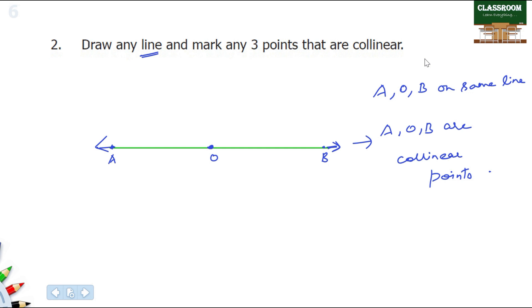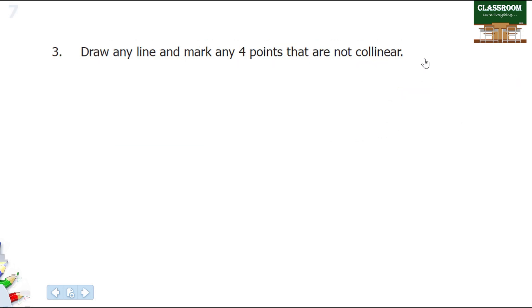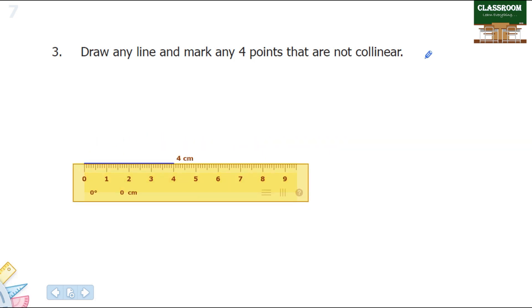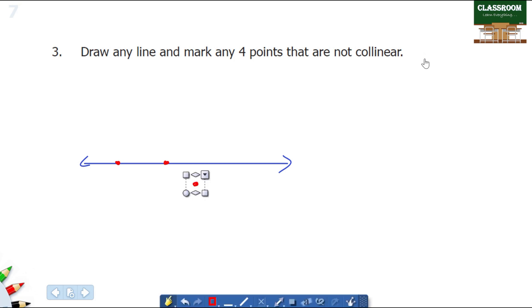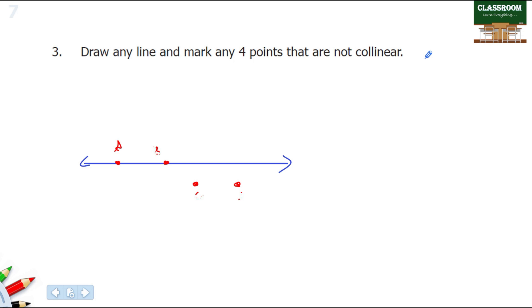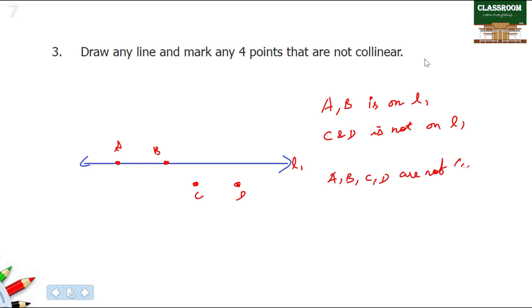Draw any line and mark any four points that are not collinear. We put a line and mark four points A, B, C, D. A and B are on line 1, but C and D are not on line 1. So A, B, C, D are not collinear.